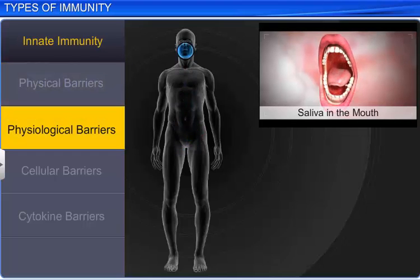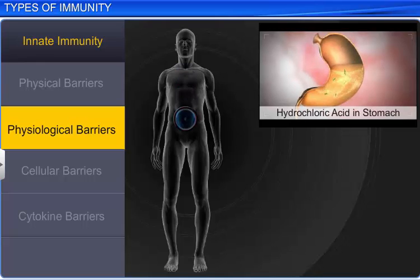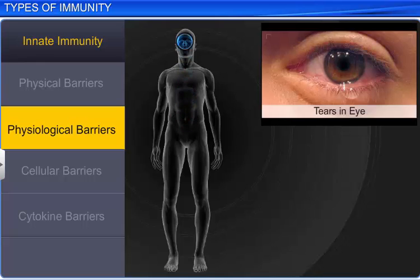Saliva in the mouth, hydrochloric acid inside the stomach, as well as tears in the eyes, act as physiological barriers to microbial invasion.